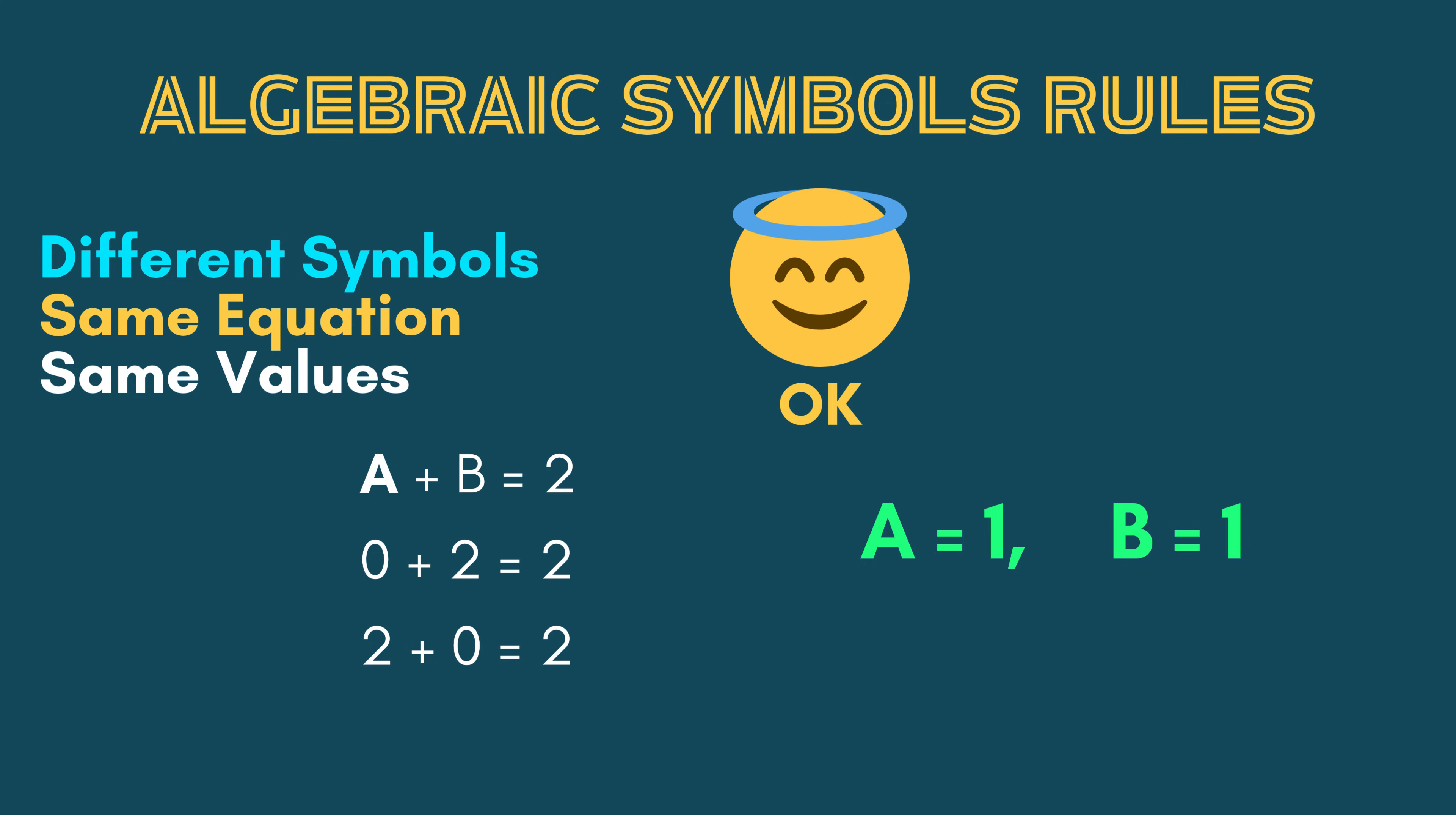In algebra, B is what's called a variable because its value can vary or change. In fact, in this equation, both A and B are variables because their values will change depending on the value of each other.